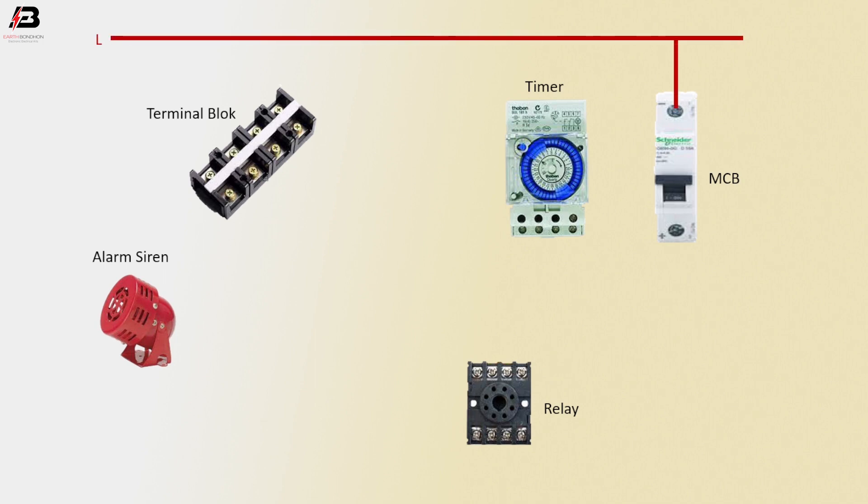Phase connection input to MCB circuit breaker. Neutral connection connects to terminal block. Neutral connection from terminal block connects to timer neutral point.